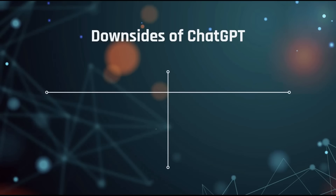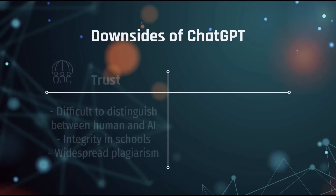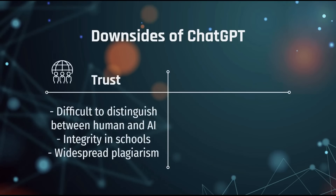Now that we've explored some really cool demos of ChatGPT, let's take a look at some of the problems that it might bring. First, it threatens the trust we have in content we read because it is very hard to distinguish whether a human wrote it or an AI wrote it. Can teachers in schools and colleges even know whether a student used ChatGPT to do an assignment? It is very difficult to identify with certainty because the technology is improving so much every day that it is almost as good as humans, and even better in some cases.